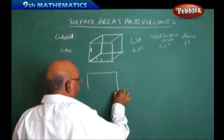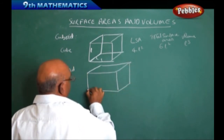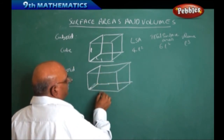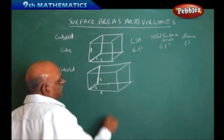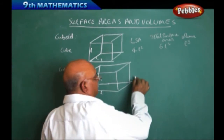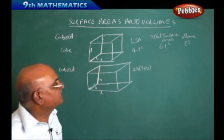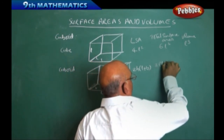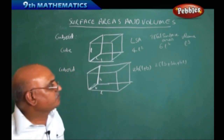In the cuboid, length is different and simultaneously breadth is also different. Suppose if I consider this is L, this is B, and this particular portion is the height H, then we want to find out the lateral surface area. We get lateral surface area equal to 2H(L + B). That is the lateral surface area. Total surface area is 2(LB + BH + HL).